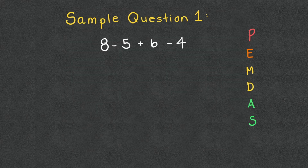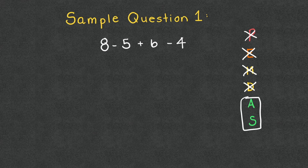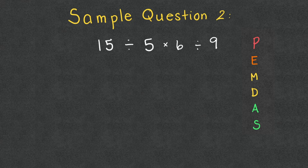Sample question one: 8 − 5 + 6 − 4. No parentheses, no exponents, no multiplication or division — just addition and subtraction, whichever comes first left to right. 8 − 5 = 3, then 3 + 6 = 9, then 9 − 4 = 5. The answer is 5.